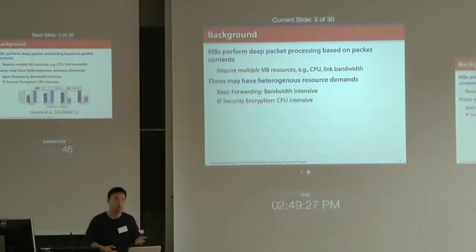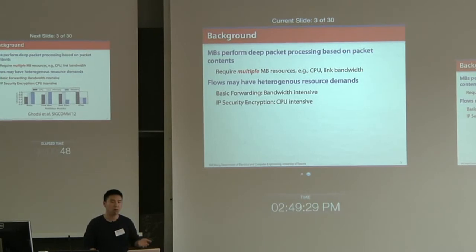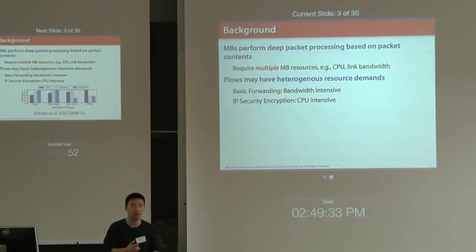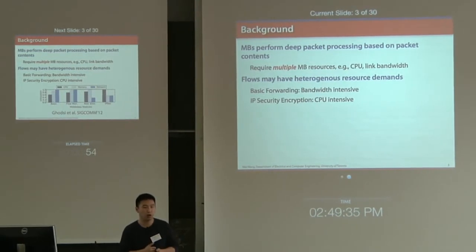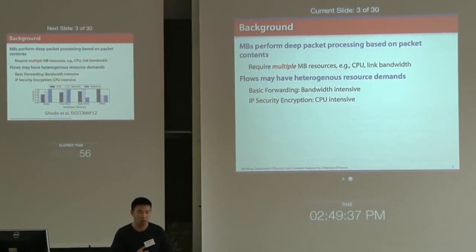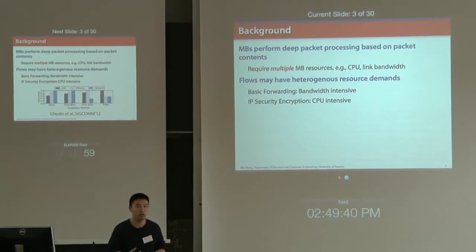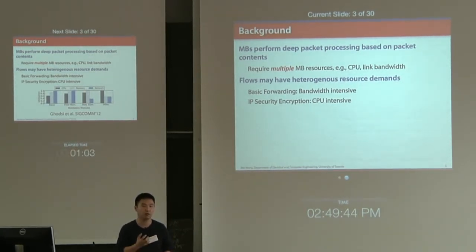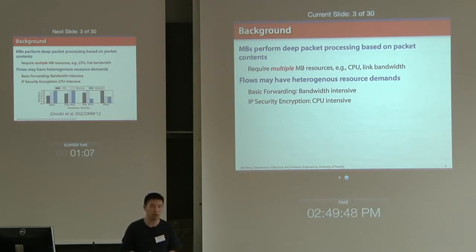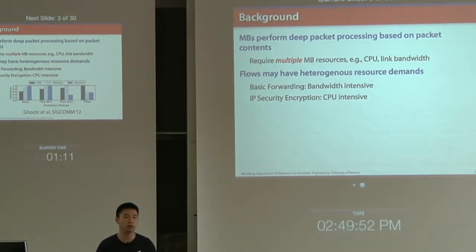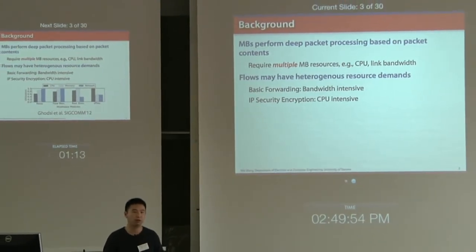That requires consuming multiple middlebox resources like the CPU and link bandwidth. For example, if you're doing intrusion detection, you have to look at the packet payload and analyze whether it is an attack — that consumes CPU resources — and then if you decide to forward it to the next hop, you consume link bandwidth.